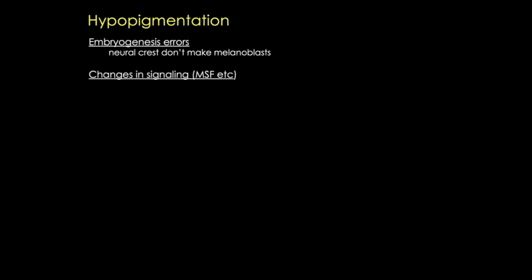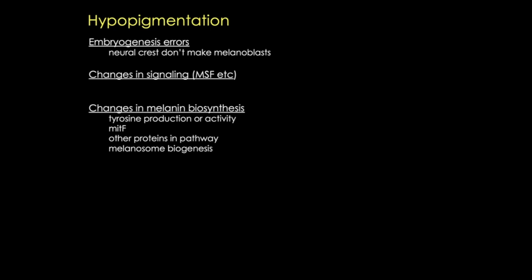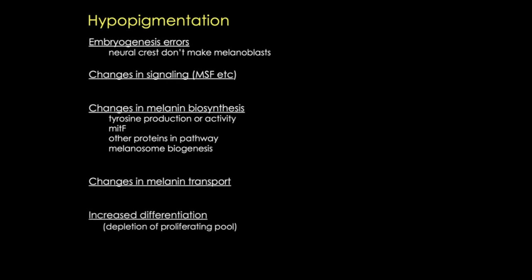Just as with hyperpigmentation, there are multiple ways to ultimately decrease melanin—from congenitally reduced numbers of melanoblasts, resulting in reduced numbers of melanocytes, to interference with pathway steps through signaling or changes in melanin biosynthesis. We can also change melanin transport or see increased differentiation that depletes melanoblasts, eventually resulting in hypopigmentation.